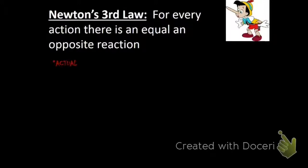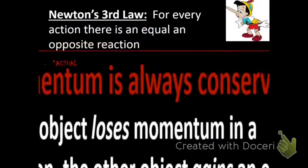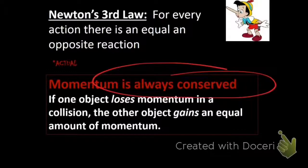And one last reframing of Newton's third law is for every action there's an equal and opposite reaction. Another way to say that would be that momentum is always conserved. If one object loses momentum in a collision, then another object must gain an equal amount of momentum. And this will actually be a key piece that shows up in a lot of your homework, is that momentum is conserved.